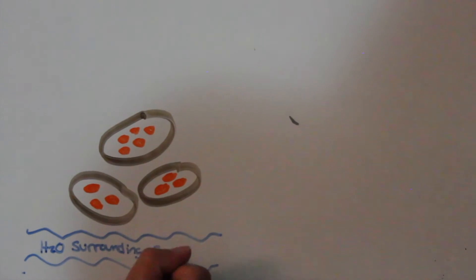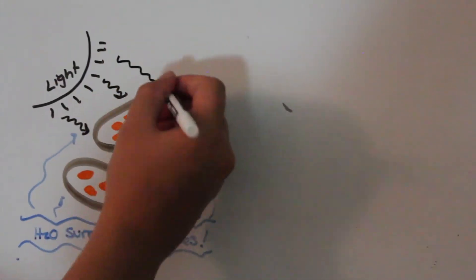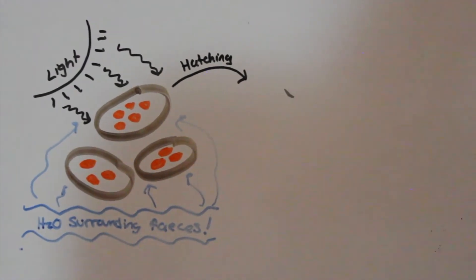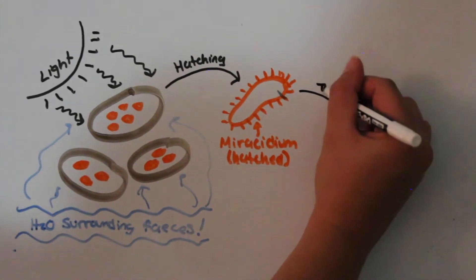If the myricidium is stimulated by light and the egg is surrounded by water, the myricidium will hatch. The myricidium are ciliated, motile, contain two eye spots and are fluke-like in shape.